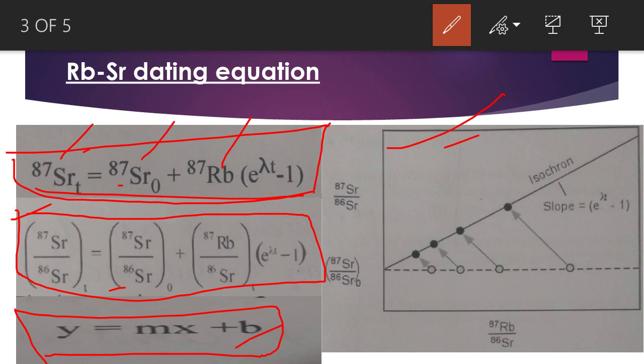Where b equals 87Sr/86Sr at time zero. This is the position of intercept b at time zero. This is the ratio of strontium isotopes.